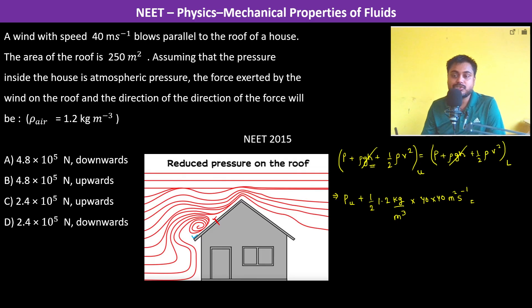This is equal to the pressure which is at the lower plus half rho v squared. Now the velocity inside the house is going to be zero. So here the velocity is going to be zero.